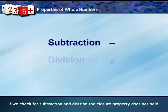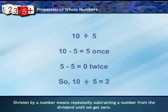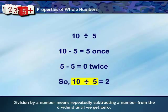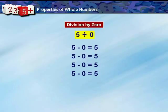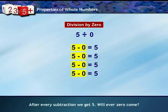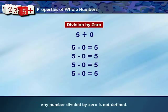If we check subtraction and division, the closure property does not hold. Division by a number means repeatedly subtracting that number from the dividend until we get 0. For example, 10 ÷ 5 = 2. However, if we divide 5 by 0, after every subtraction we still get 5 and never reach 0. Therefore, any number divided by 0 is not defined.